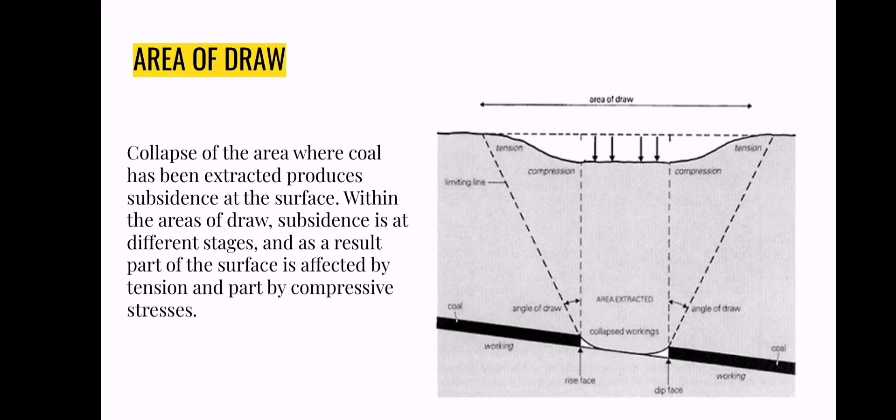Collapse of the area where coal has been extracted produces subsidence at the surface. Within the area of draw, subsidence is at different stages and as a result, part of the surface is affected by tension and part by compressive stresses. Collapse behind the working face underground produces differential vertical subsidence within the area of draw at the surface and a general lowering of the ground surface above those older longwall mines where settlement is complete.